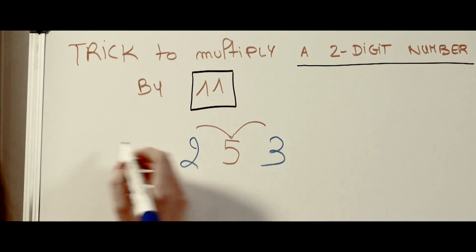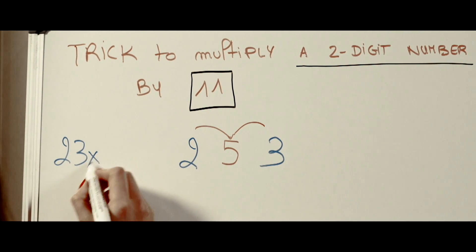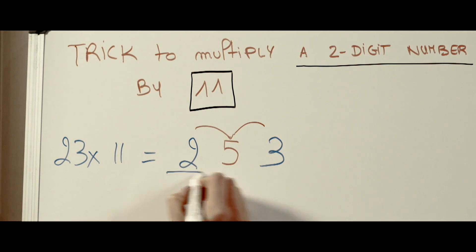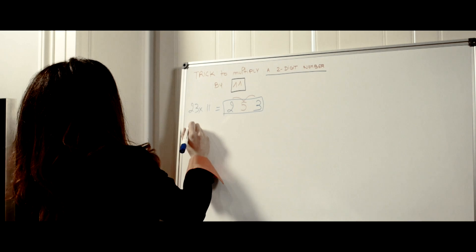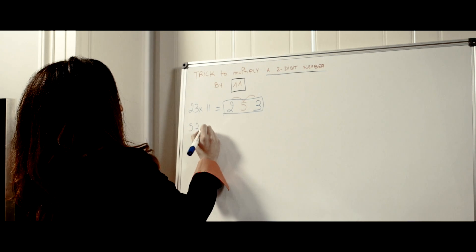The answer of multiplying 23 by 11 is 2, 5, 3. Now let's pick another number. Let's say we're picking 52 times 11.